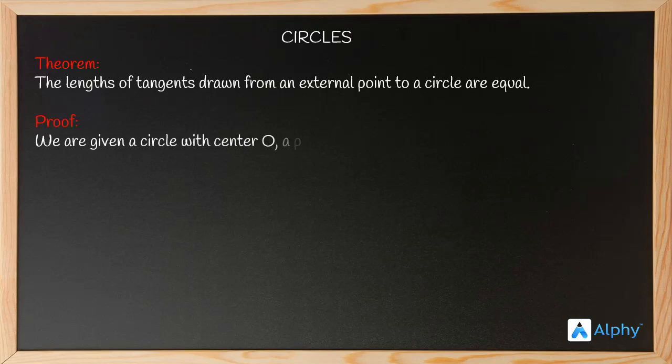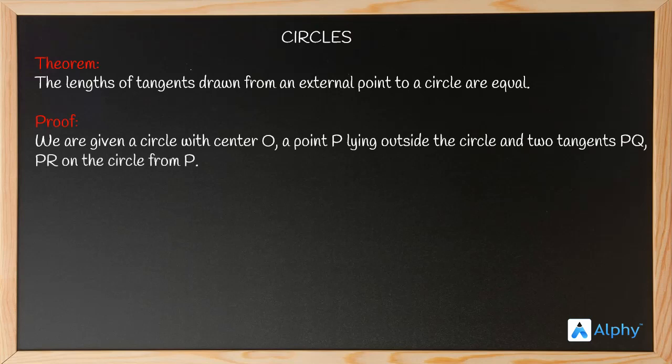We are given a circle with center O, a point P lying outside the circle, and two tangents PQ and PR on the circle from P. We are required to prove that PQ equals PR. For this, we join OP, OQ, and OR.